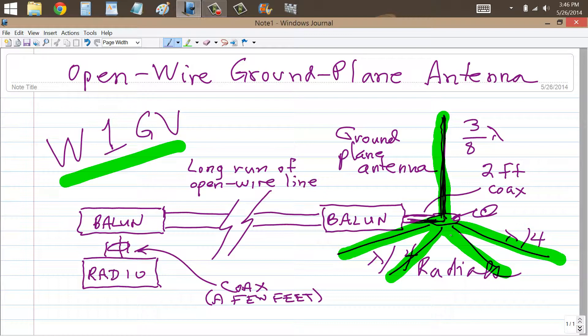Of course, if you slope the radials down, you can get a 50 ohm impedance with a quarter wavelength radiator, but that's a little bit beside the point.